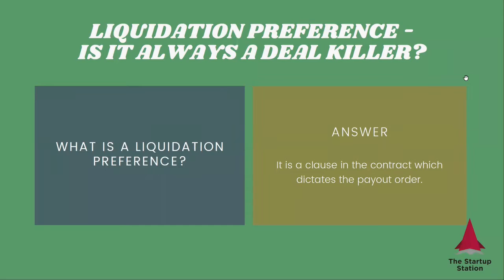So let's talk about first, what is a liquidation preference? It is a clause in a contract that dictates the payout order. It's a clause that tells everybody how everybody will get paid. So if an investor has this preference, that investor will get paid first before everybody else.